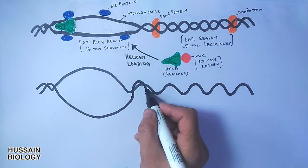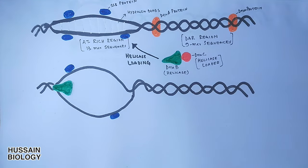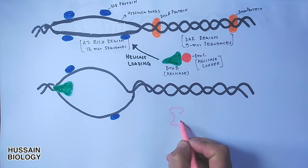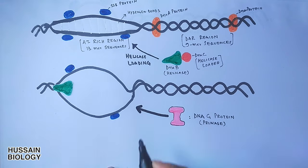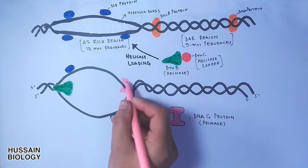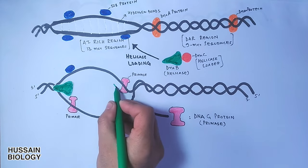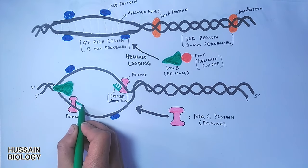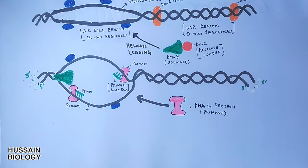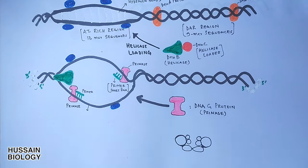Then finally, to the replication bubble, DNA G protein—that's the primase protein—binds to the respective strands and lays down the primer in the form of small RNA stretches.